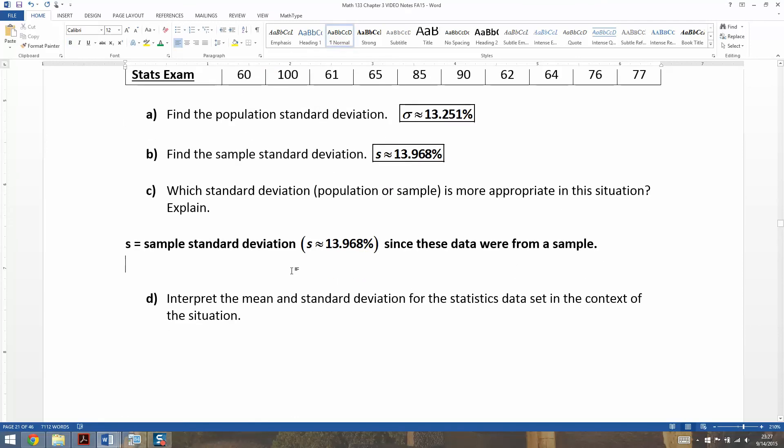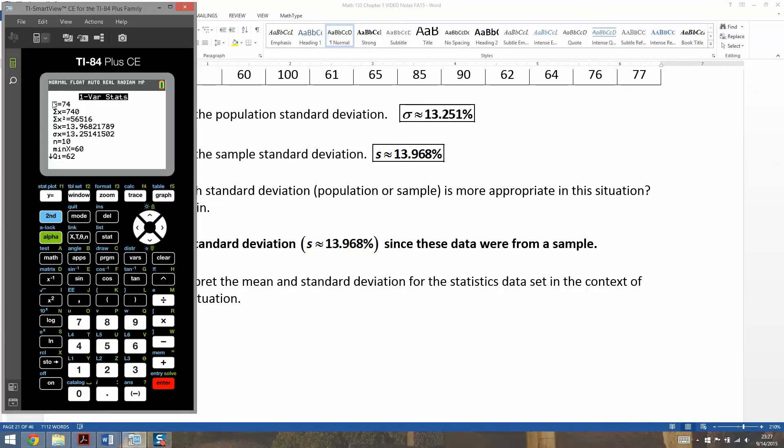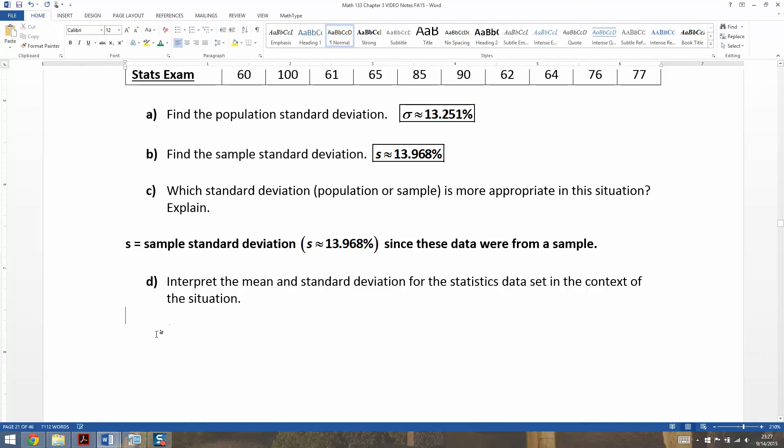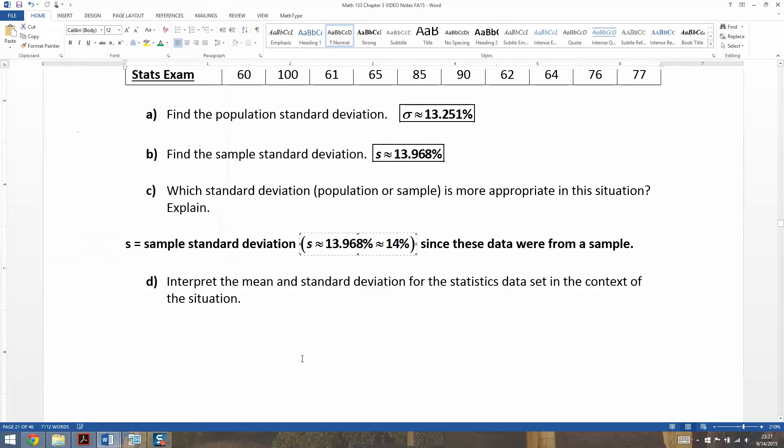So now, let's interpret the mean and the standard deviation. So let's remind ourselves what the mean was. Up at the top, you can see it's 74 right there. Now, the calculator, by the way, never gives you a mu symbol. So you just have to know this was x bar, not mu, or vice versa, because it'll always call it x bar. So if you were a student in this class, you would expect to get 74% on your exam, give or take, and I'm going to round this to 14% just for our own purposes here, because this is really close to 14%.